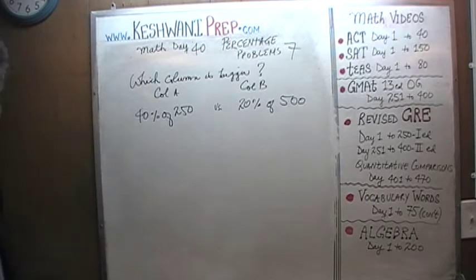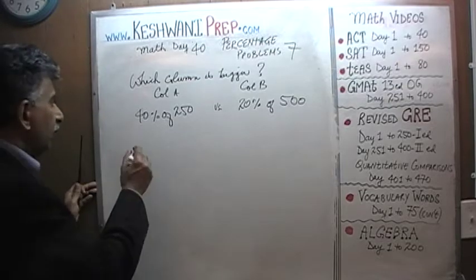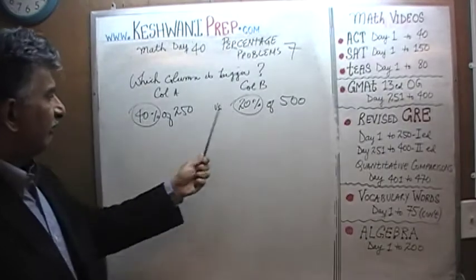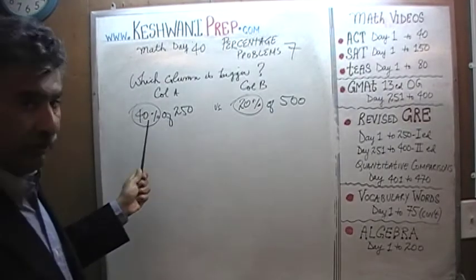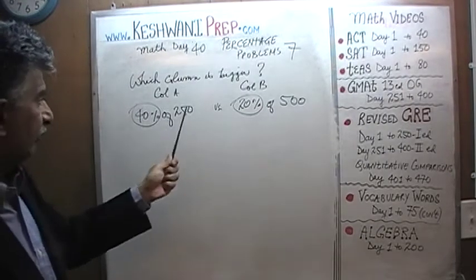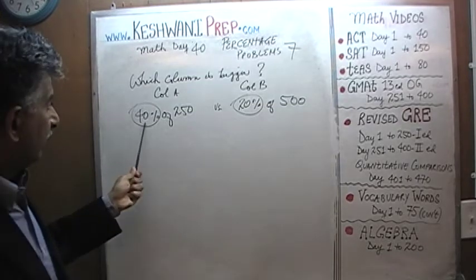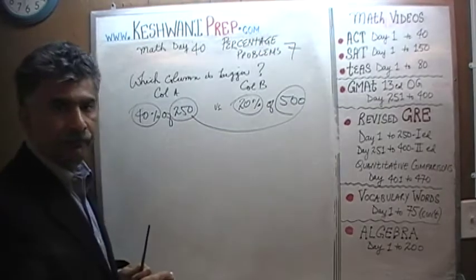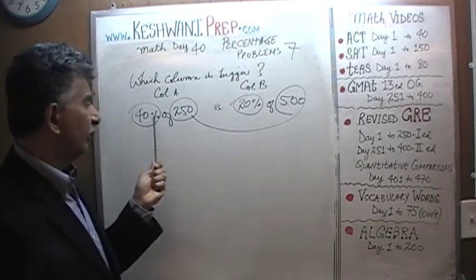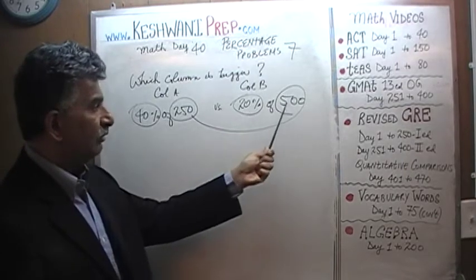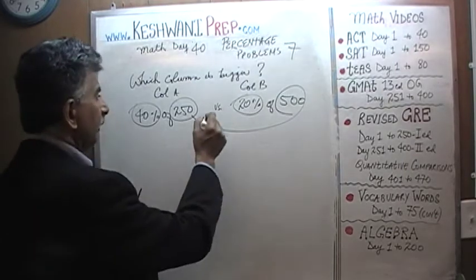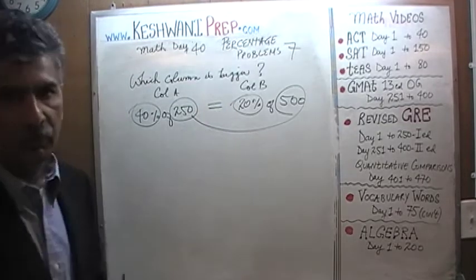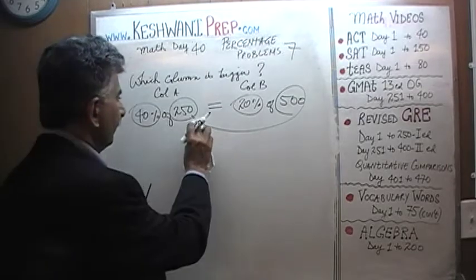Let's see what we can do. What you should notice is that we have 40% here and 20% here — half the percentage. We have 20% as opposed to 40%, which is half the percentage of twice the number. Even though this is 20% as opposed to 40%, we have taken half the percentage of twice the number. They are equal.